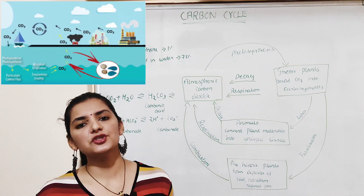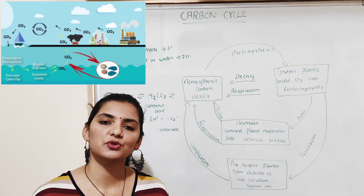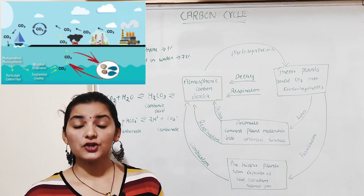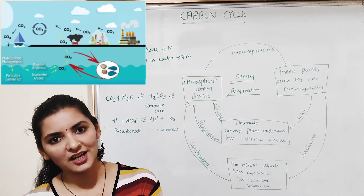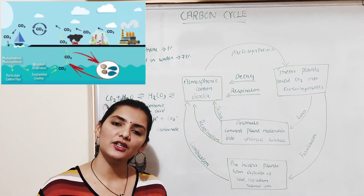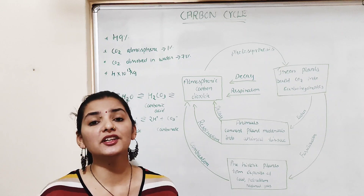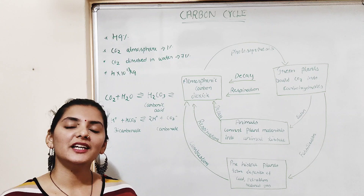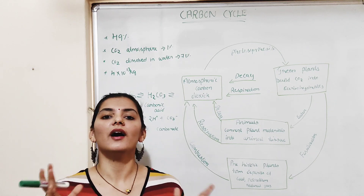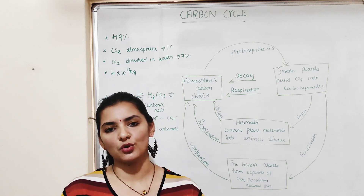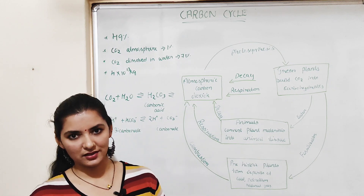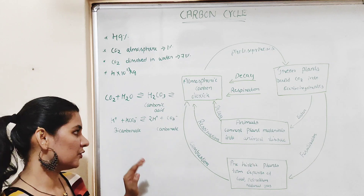This bicarbonate or carbonate is used by organisms like oysters, clams, protozoans, and algae. These animals combine the carbonate with dissolved calcium to produce calcium carbonate, which they use for shell formation. After the death of these organisms, their shells either dissolve in the water or settle at the bottom of the sea or ocean in sedimentary form. This sediment, consisting of large quantities of calcium carbonate, also forms a major source of carbon on earth.